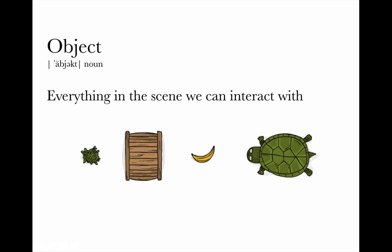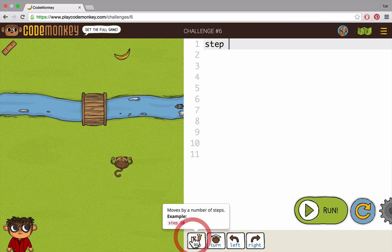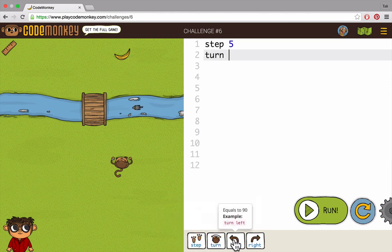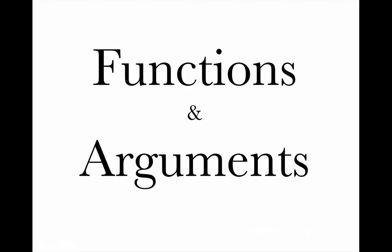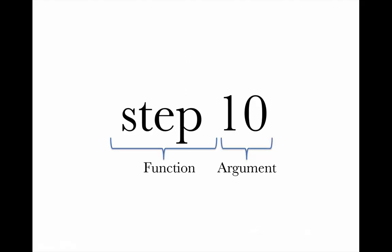What are objects? Objects are everything in the scene we can interact with, like the bush, bridge, banana, and turtle. Some objects have a set of actions they can do. For example, the monkey can step and turn. These actions are called functions, and the input we add to them is called an argument.